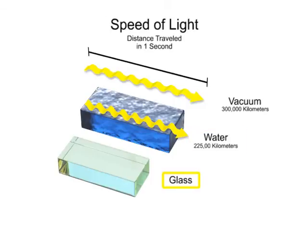In glass, light travels at 67% of its speed in a vacuum, so the light speed is 300,000 times 0.67, or about 200,000 km per second.